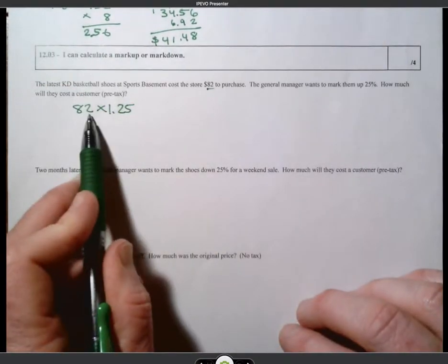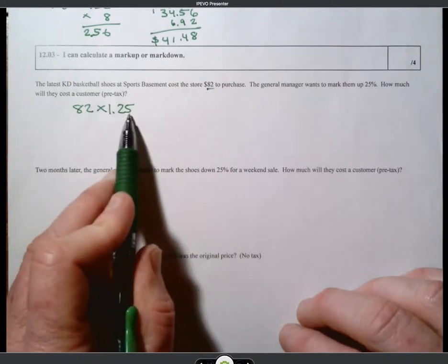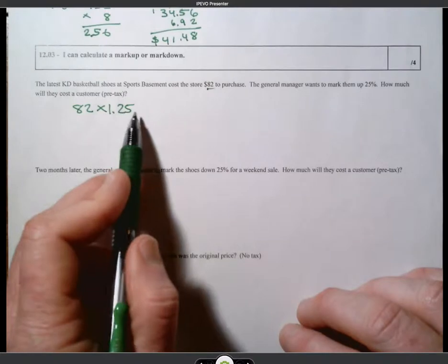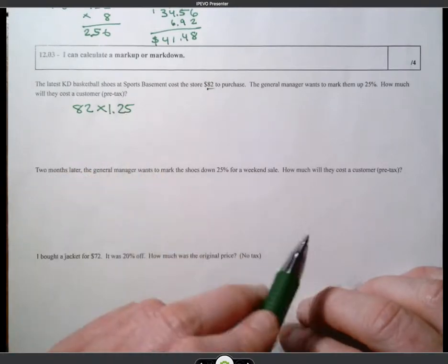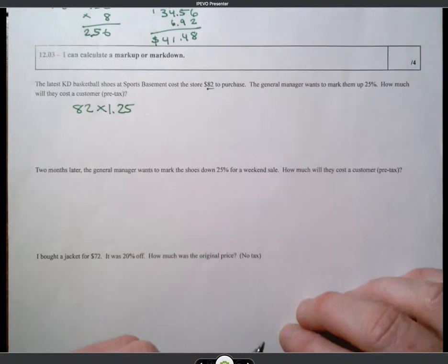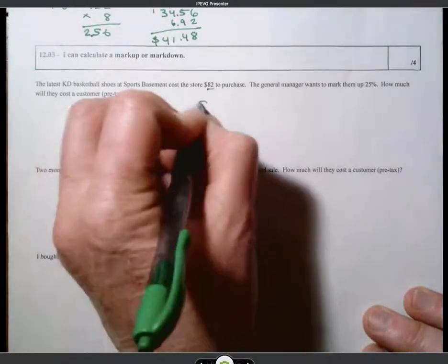Because 1 will give us the $82. The 0.25, 25%, will give us the markup. And if I multiply 82 times 1.25, I will get the new marked up price. Okay? So if I go ahead and do that.